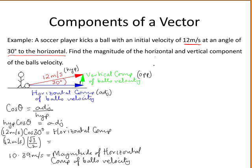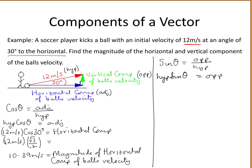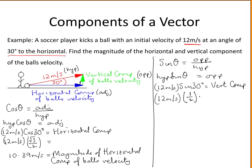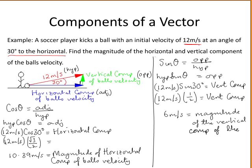Now solving for the magnitude of the vertical component: the sine of an angle is the opposite over the hypotenuse. Multiplying both sides by the hypotenuse and filling in from the picture, our angle is 30 degrees and the opposite is the vertical component of the ball's velocity. The sine of 30 degrees is one half, so the vertical component equals 12 times one half, which gives 6 meters per second.